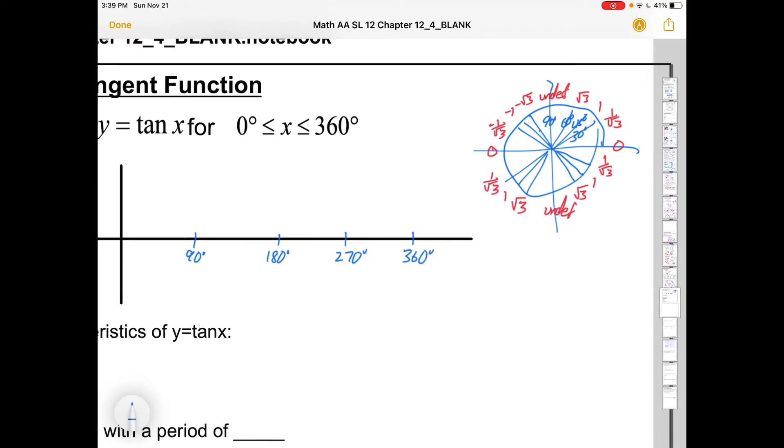I know that the tangent at 0 is 0. The tangent at 30 degrees is 1 over root 3, so that's about 0.57ish around there. At 45 degrees the tangent is 1. At 60 degrees the tangent is root 3 which is 1.7ish. Then at 90 degrees we don't know.